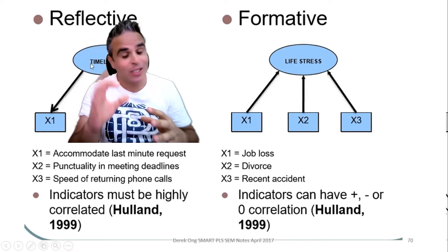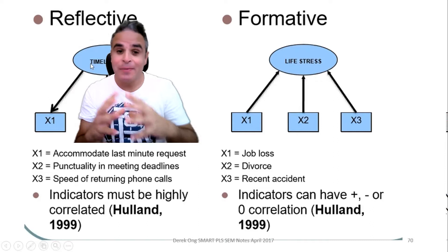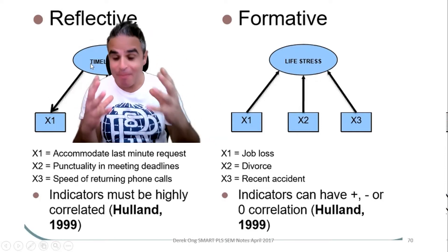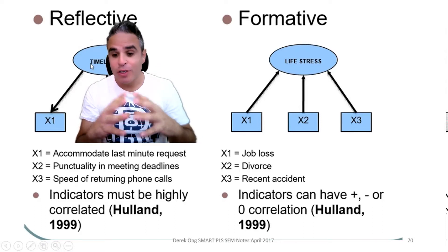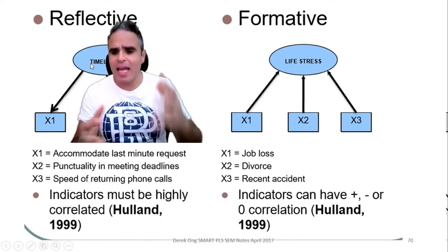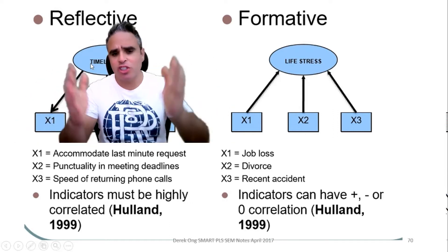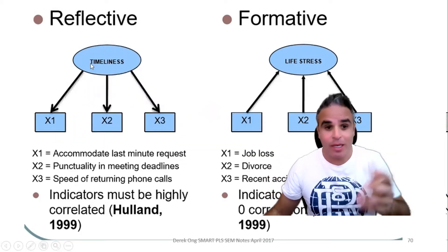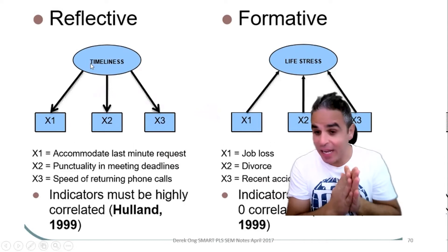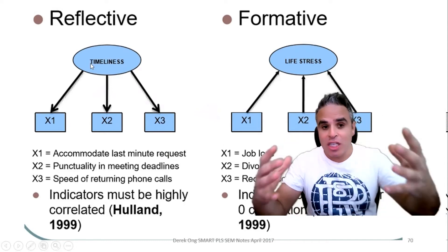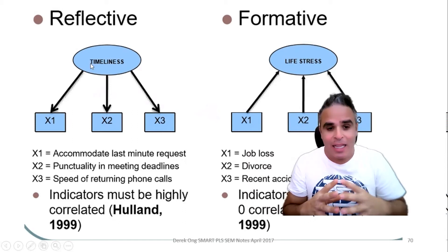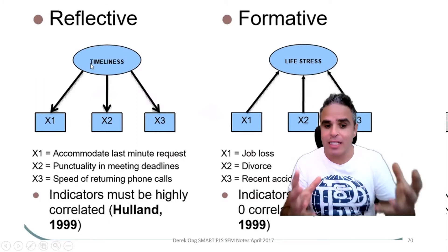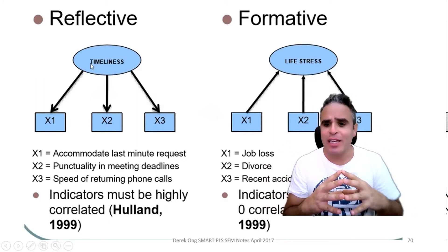Those indicators can have a plus, minus, or zero correlation — they don't have to be correlated at all, contrary to reflective indicators where they can be very highly correlated. Job loss, divorce, accidents, financial troubles, family troubles, etc. form that construct. In reflective indicators, they are just manifesting on the construct, like timeliness measured by punctuality, and they have to be highly correlated.